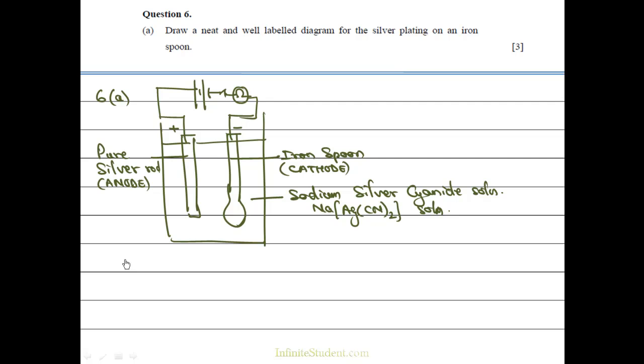In this particular example, it would be nice to give the reactions. So NaAg(CN)2 would give me Na plus, plus Ag plus, plus 2CN minus.